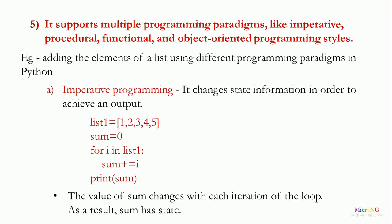Now, this type of programming style is an example for imperative programming style because the value of sum changes with each iteration of the loop. As a result, we can say that sum is having a state and the state of sum get changed inside the for loop because the value of sum will get changed during each iteration. So, Python language can be used for imperative programming style.